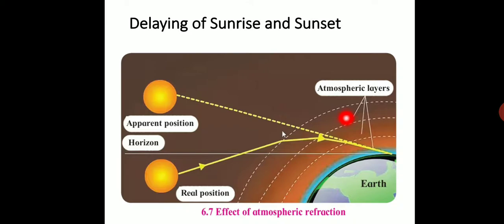Therefore, when the rays of light from the sun enter the Earth's atmosphere, refraction takes place and they bend towards the normal. Now suppose the sun is below the horizon.